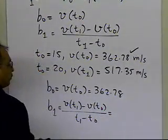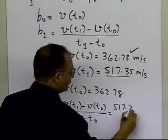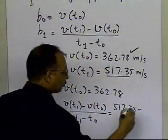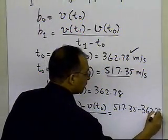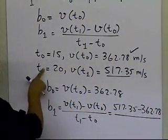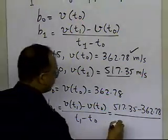This equals (517.35 - 362.78) / (20 - 15).